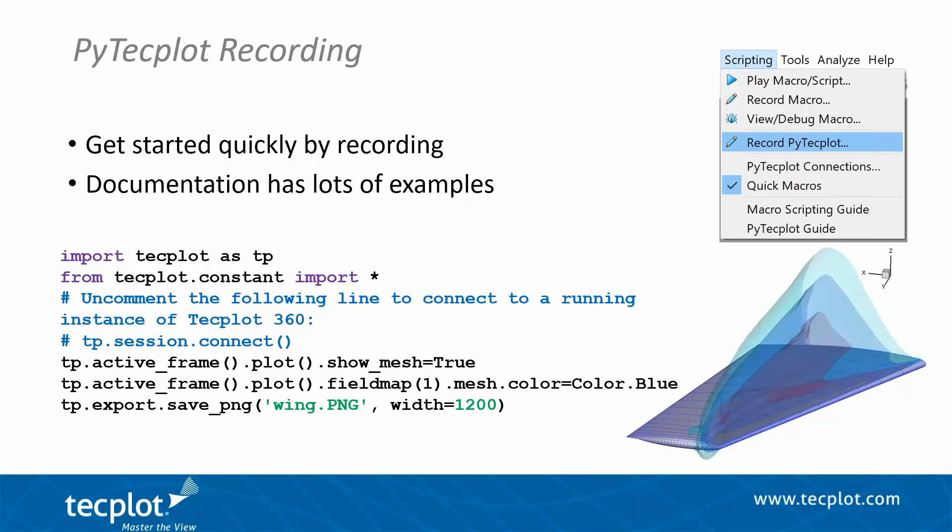The code shown here is an actual recorded PyTecplot script. In this case, I wanted to know how to turn on the mesh, change the mesh color to blue on a wing surface, and then export to an image file. Just by recording those steps in the Tecplot 360 user interface, I was able to generate the script — and that gives me a very quick start.